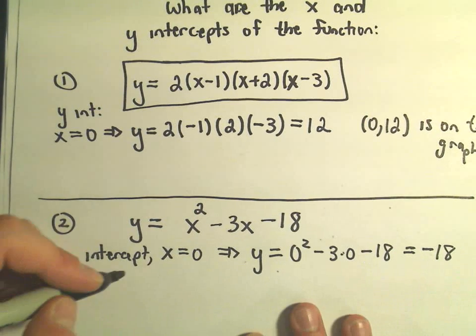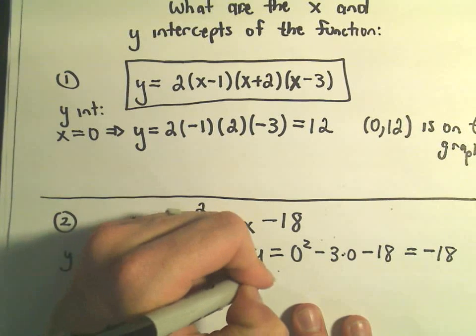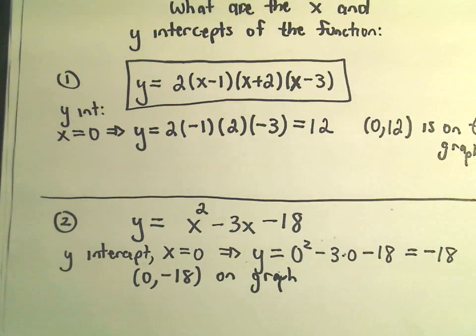So the y intercept is at negative 18, or we can say that 0 comma negative 18 is on the graph. That would be our y intercept.